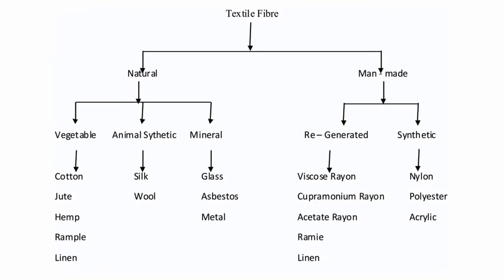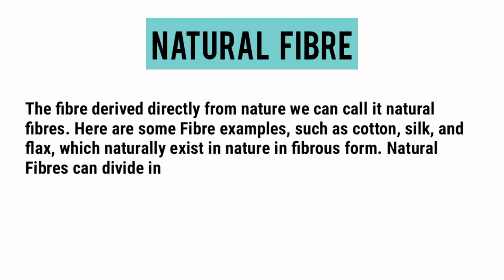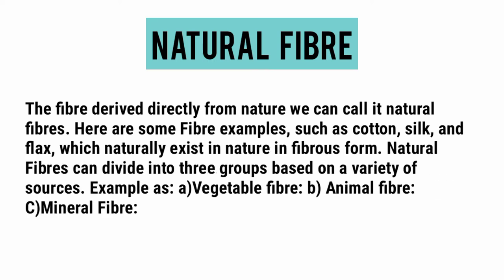Classification of textile fiber. Now you are seeing the chart of textile fiber. Natural fiber: the fiber derived directly from nature we can call natural fibers. Here are some fiber examples, such as cotton, silk, and flax, which naturally exist in nature in fibrous form. Natural fibers can be divided into three groups based on a variety of sources.